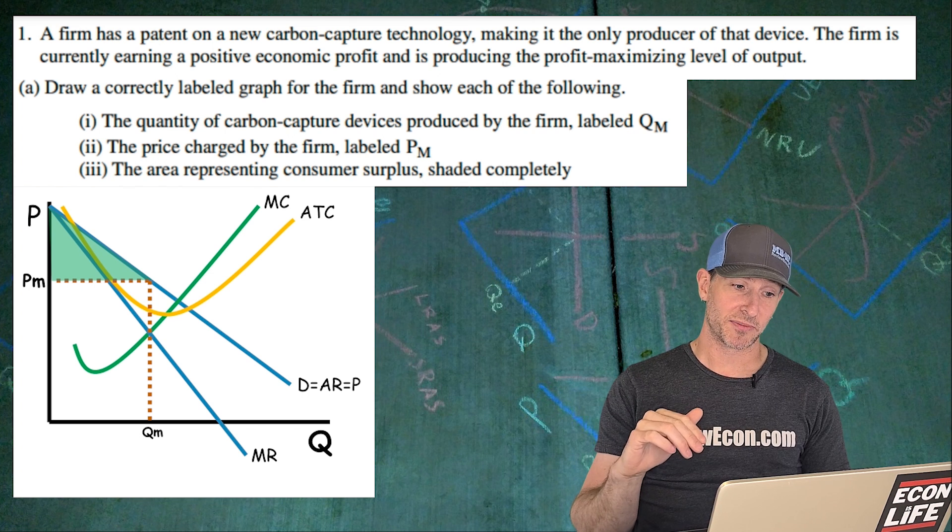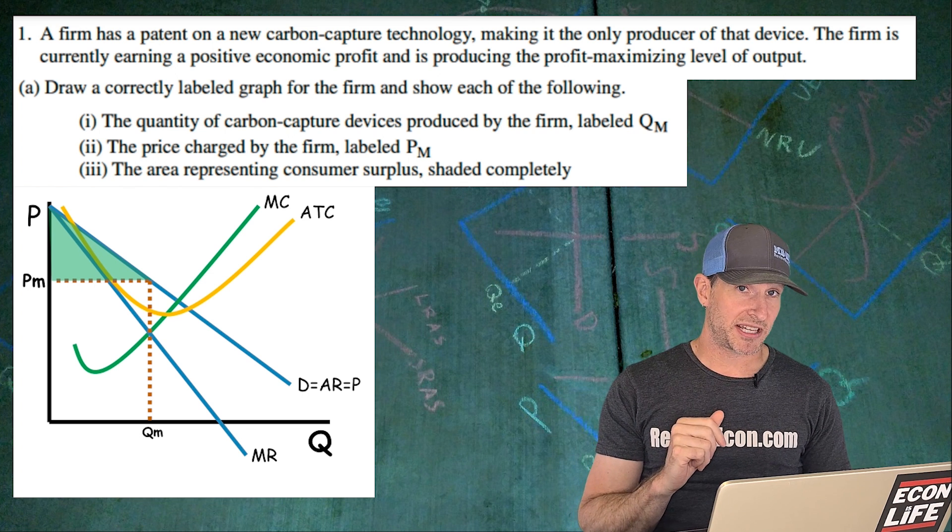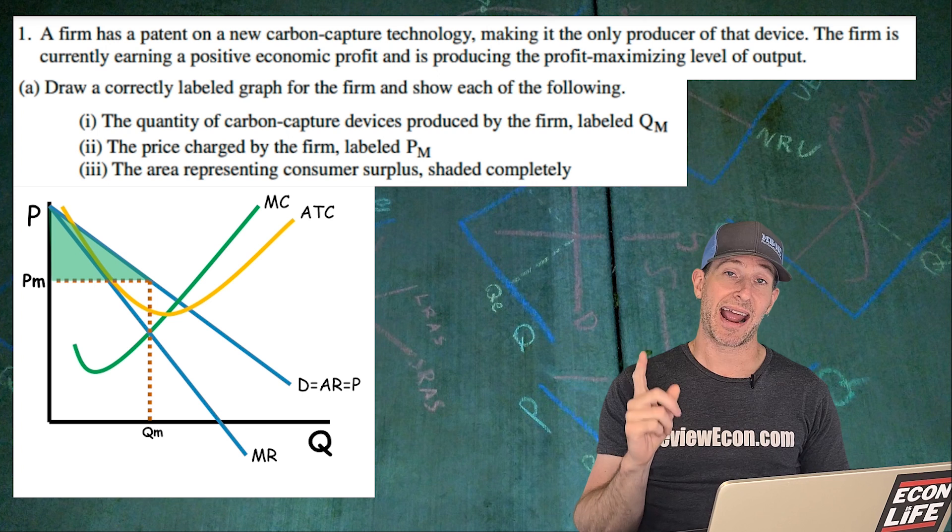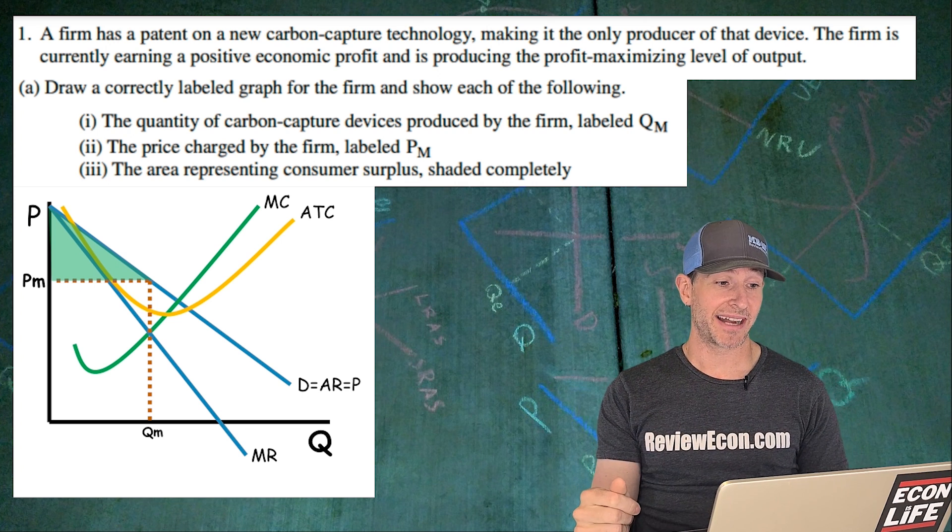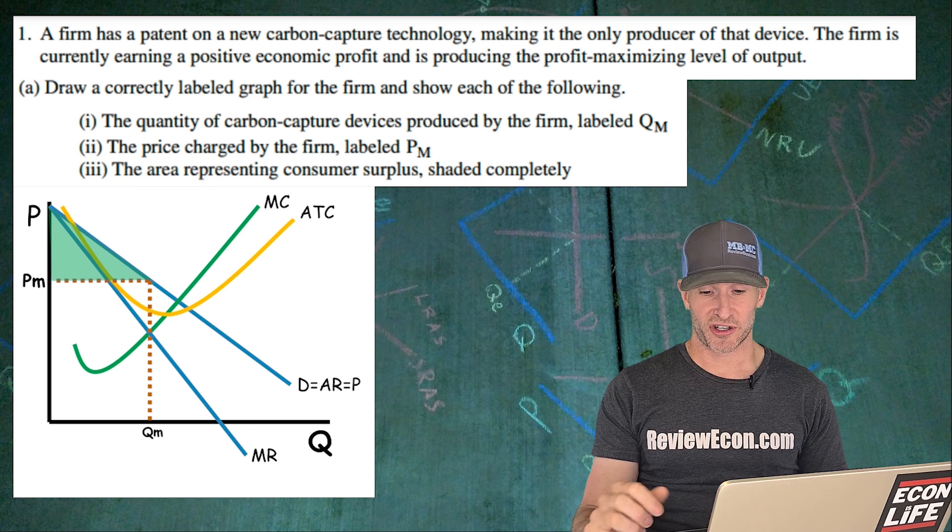There's my answer right there. Downward sloping demand, marginal revenue below demand, MR equals MC quantity, priced all the way up to the demand curve there, and then that triangle above the price until you hit the demand curve is our consumer surplus. There you go.